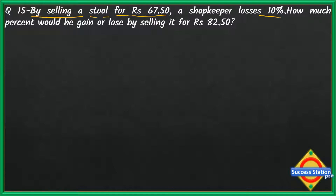So when a shopkeeper sells the stool for ₹67.50, the shopkeeper gets a loss of 10%. And the question asks: how much percent would he gain or lose by selling it for rupees 82.50? So this question has two parts.